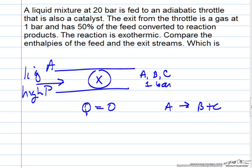They're at one bar. It says it's an exothermic reaction, delta H reaction is less than zero, and it wants the enthalpies of the feed and the exit streams to be compared. The question is, which one is larger?